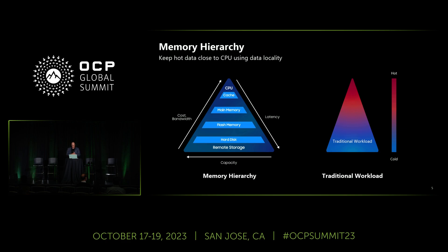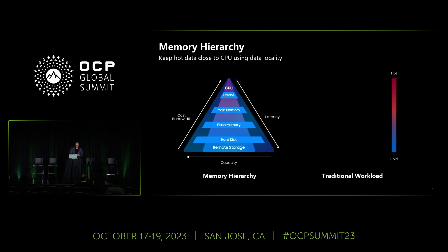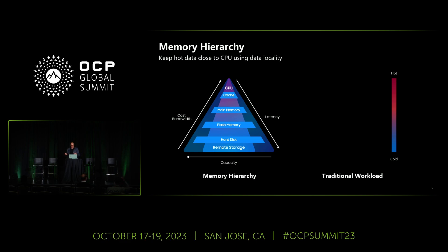This one is quite illustrative. We've all seen this triangle at Flash Memory Summit or OCP — the hierarchy of memories down to storage. From L1, L2 on the CPU, to HBM memory, to DRAM main memory, to Flash media, and then down to hard disk drives and even tape, because it's one of the cheapest forms of remote storage.